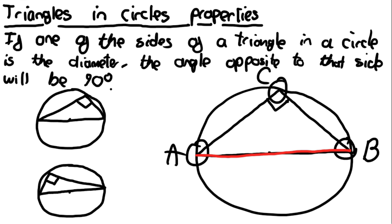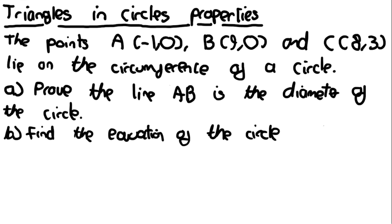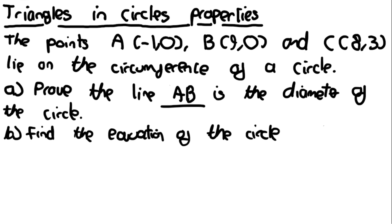So if you prove that the gradient of AC is M and the gradient of BC is minus 1 over M, you have proved that the angle ACB is 90 degrees and therefore that AB is the diameter of the circle. This is an exam question that appears frequently where you're given points A, B and C and asked to prove that line AB is the diameter.